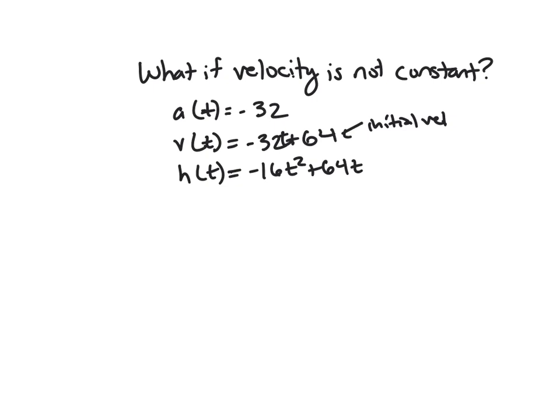If I want to know the max height, the max height is going to be when that velocity is 0. That's going to happen when t equals 2, because you'll have negative 32 times 2 plus 64. So h of 2 is going to be negative 16 times 4, so negative 64 plus 2 times 64 or 128. We get a max height of 64. So it travels 64 feet up.